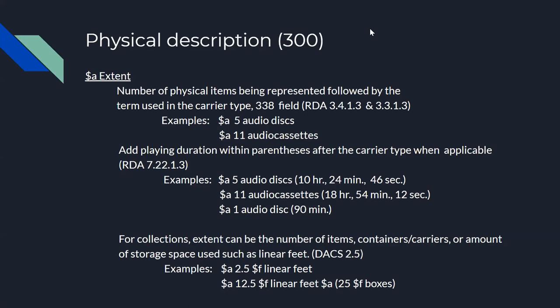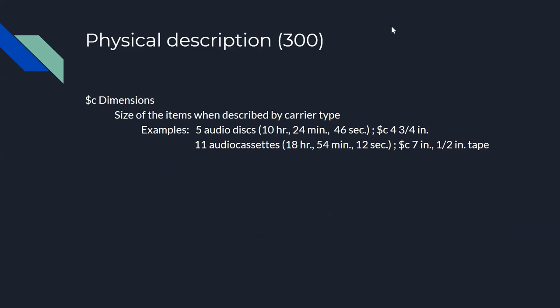For dimensions, you just need to record the size of the item being described, such as four and three-quarter inches for compact discs, or seven inches with one-half inch tape for some audio cassettes.